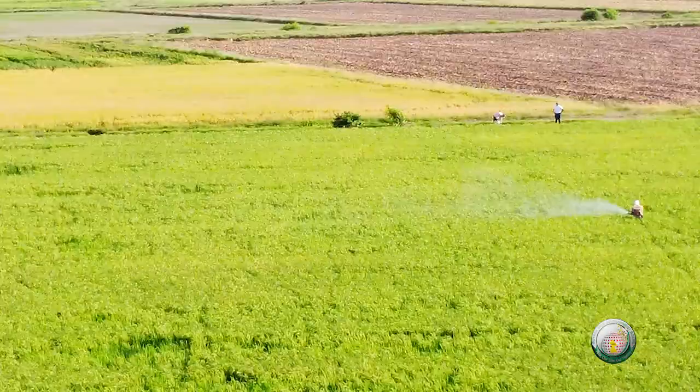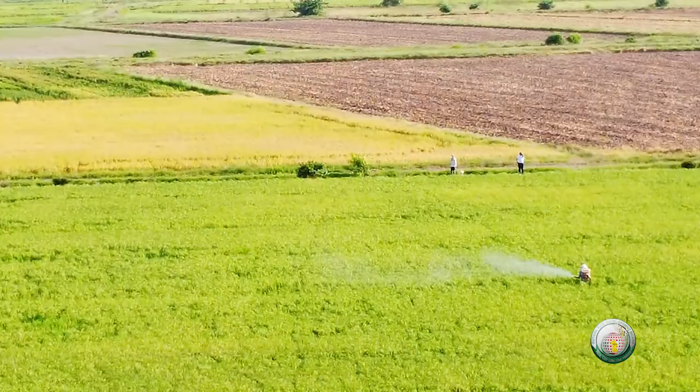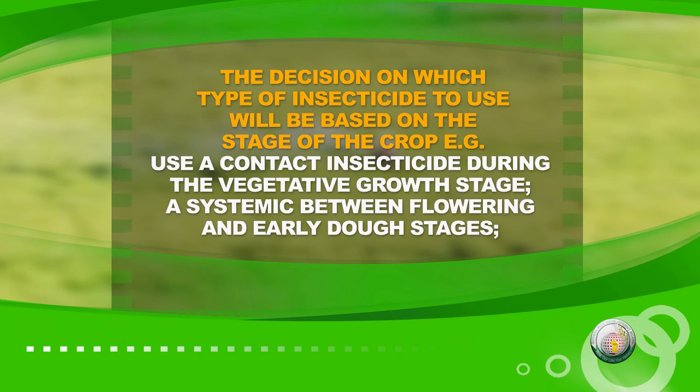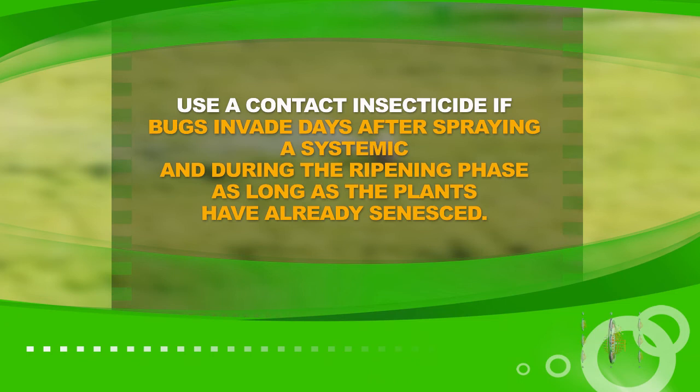The decision on which type of insecticide to use will be based on the stage of the crop. For example, use a contact insecticide during the vegetative growth stage, a systemic between flowering and early dough stages. Use a contact insecticide if bugs invade days after spraying a systemic, and during the ripening phase as long as the plants have already senesced.